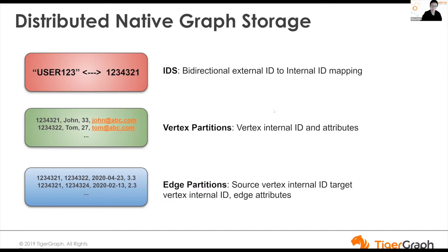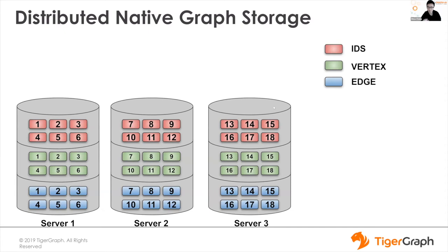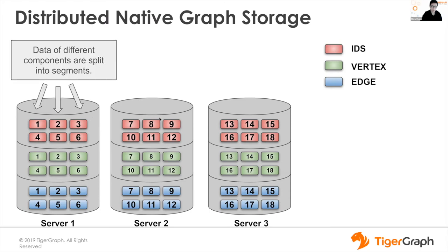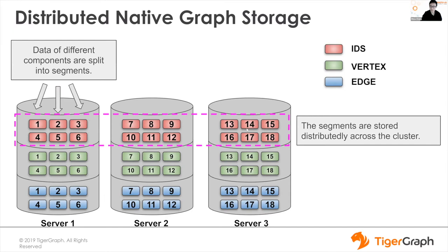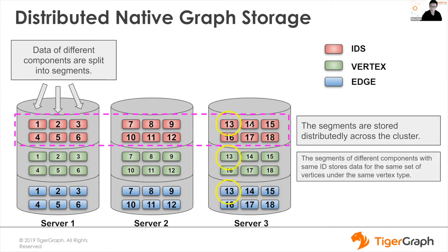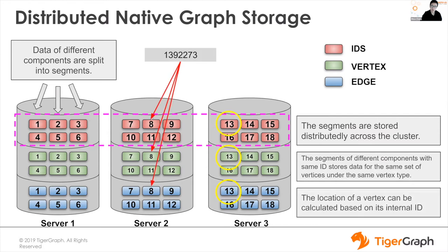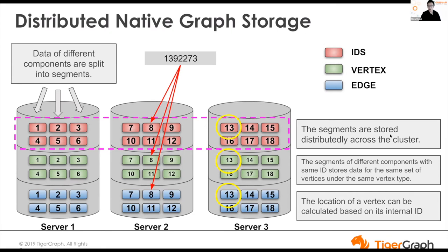In GPE we have two types of data: vertex and edges. Vertex partitions store the vertex internal ID and vertex attributes (name, age, email, etc.). Edge partitions store all the neighbors of a vertex along with their edge attributes. So the three data types under the hood are: the external-to-internal ID mapping, vertex data with their attributes, and neighbor/relationship data with edge attributes. Each type of data is segmented and stored distributedly across servers. Segments with the same number are stored on the same server, so for a specific vertex you can find its ID info, vertex info, and edge info from the same server using its internal ID.